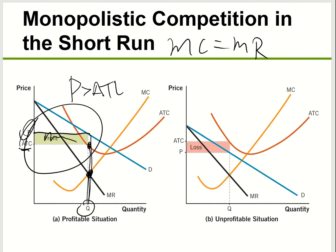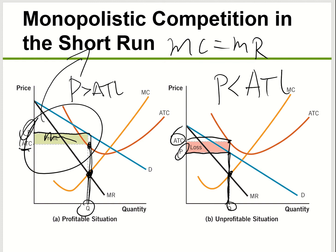This profit is only available in the short run. For panel B, again, find where marginal cost equals marginal revenue, go down to get quantity, go up to the demand curve for price, then go to the average total cost curve. Now price is less than average total cost, so this company is losing money. But again, this loss is only available in the short run. This is very similar to perfect competition — in the short run, anything is possible.